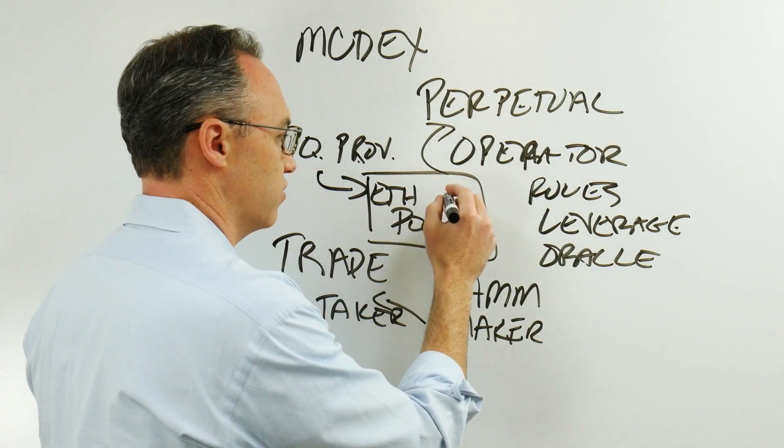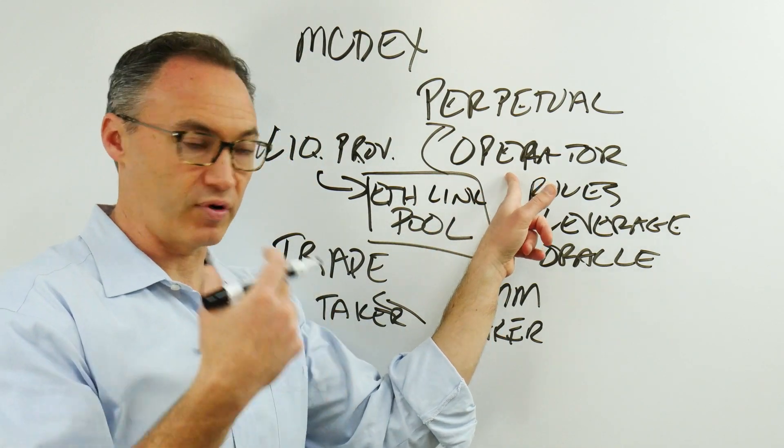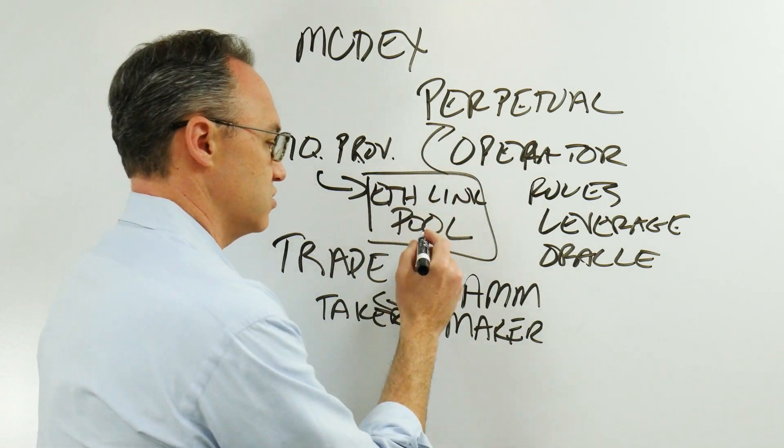They could put ETH, they could put Chainlink, whatever it might be—these are some of the rules the operator is going to set.